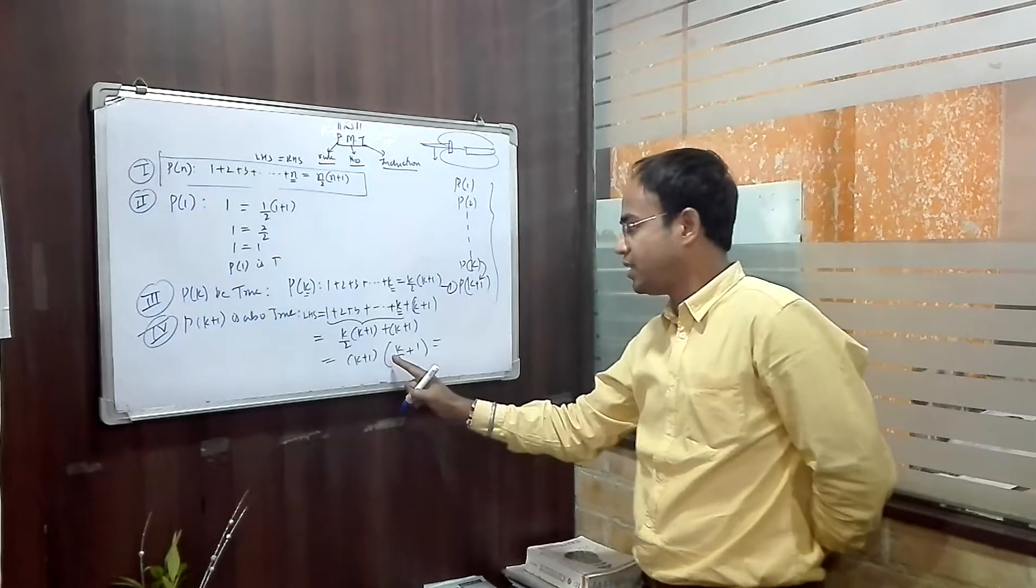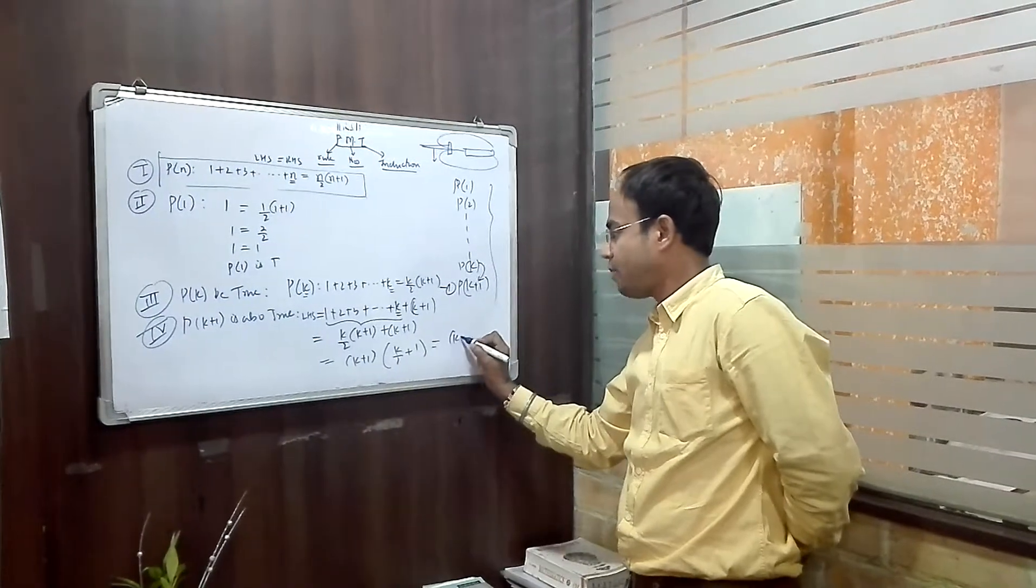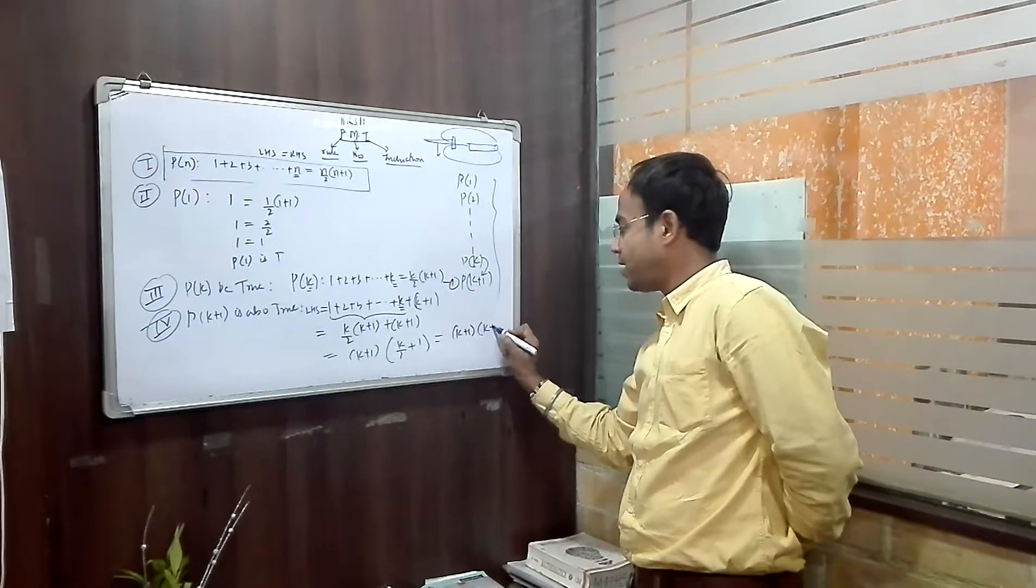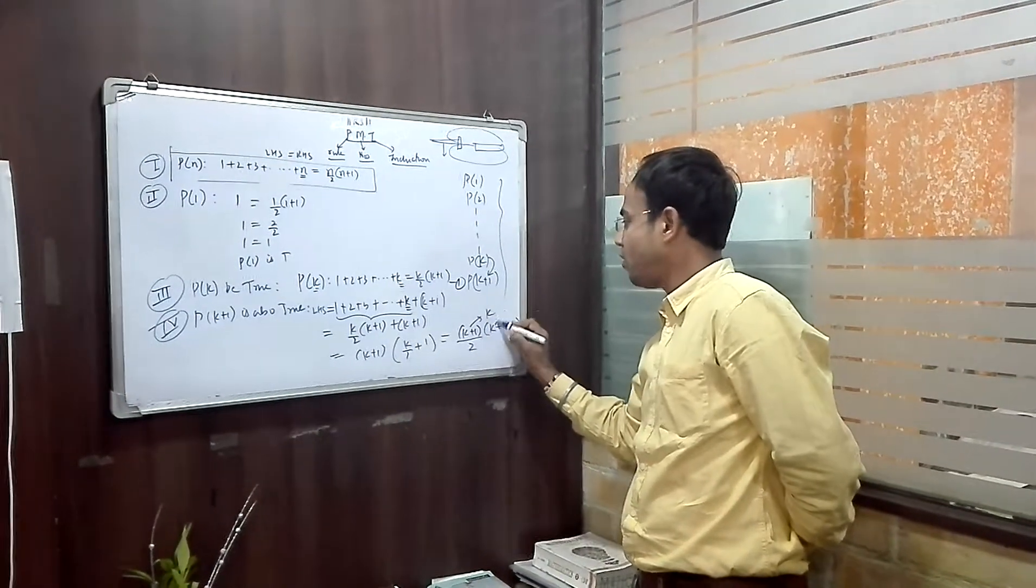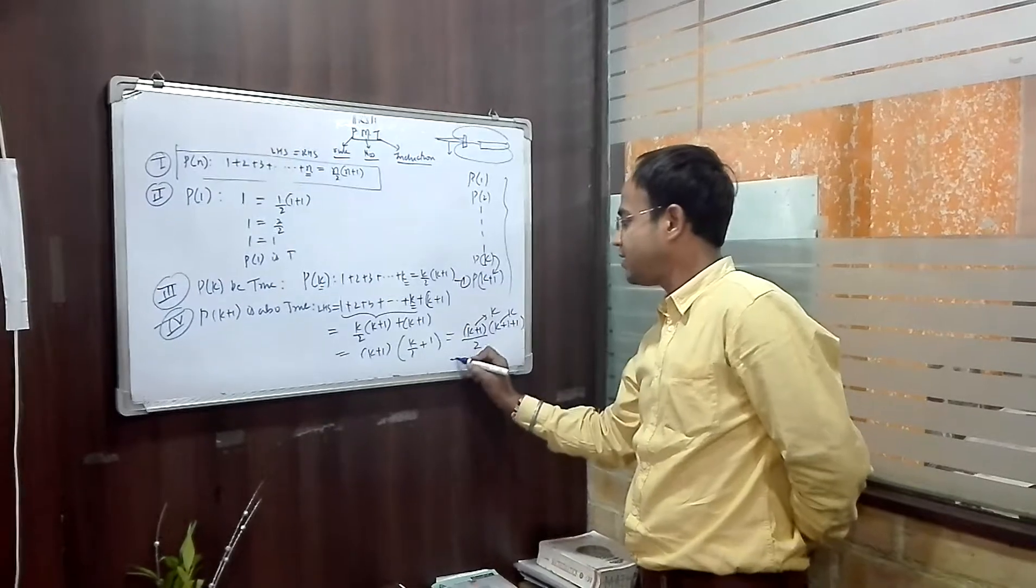If you evaluate this, please pay attention. What am I doing here? K plus 1 into K plus 2 by 2. I can write this as K plus 1 into K plus 1 plus 1 by 2. This is playing the role of K, therefore K. And hence this is equal to what? RHS.